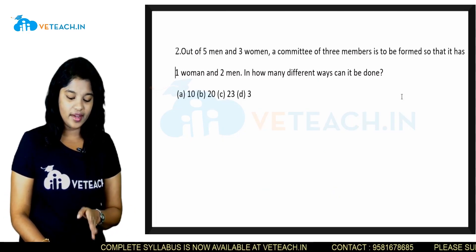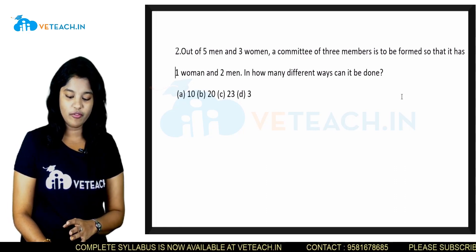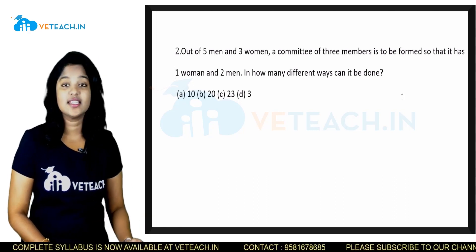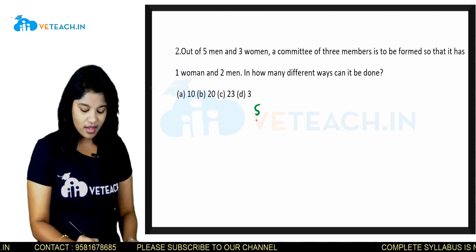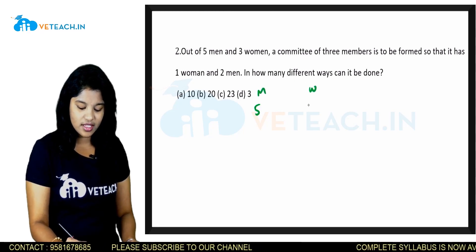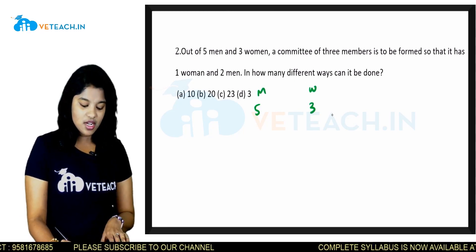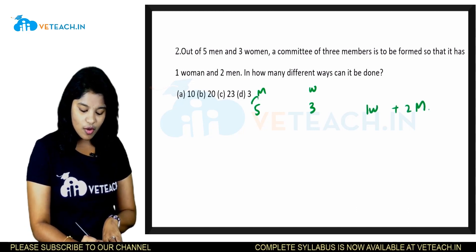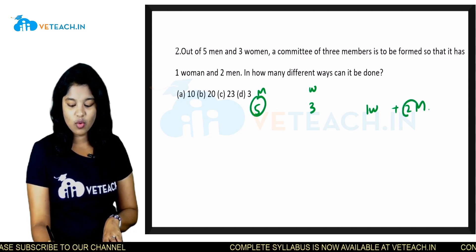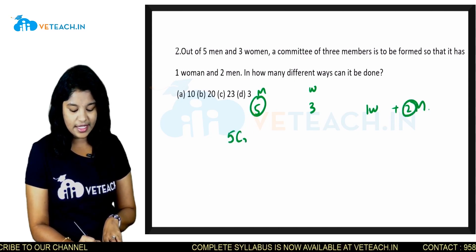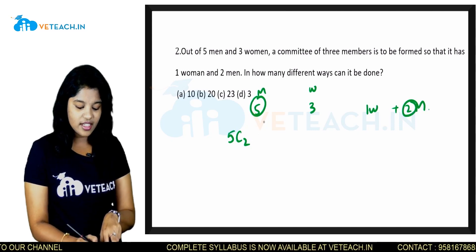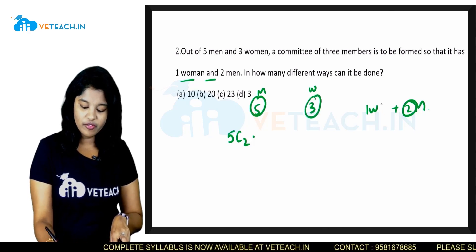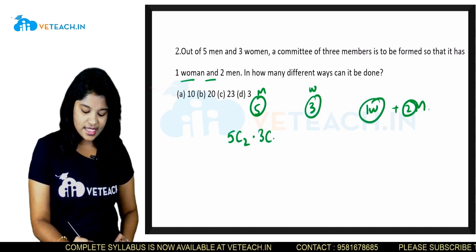Out of 5 men and 3 women, a committee of 3 members is to be formed such that it has 1 woman and 2 men. In how many different ways can it be done? Total men are 5 and women are 3. We have to select 2 men from 5, which can be done in 5C2 ways, multiplied by selecting 1 woman from 3, which is 3C1.